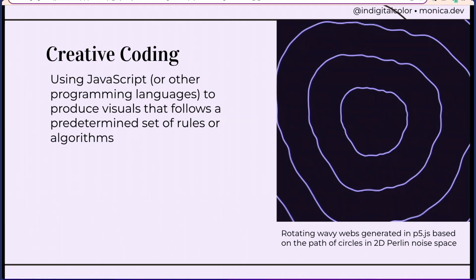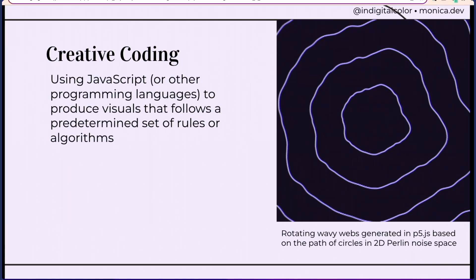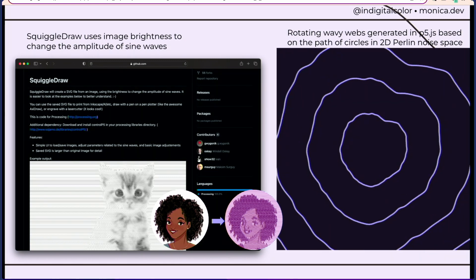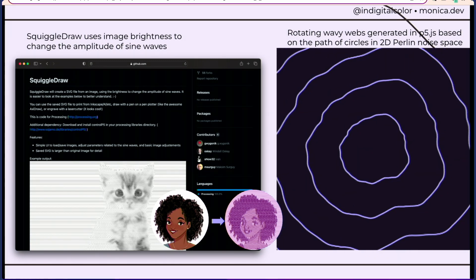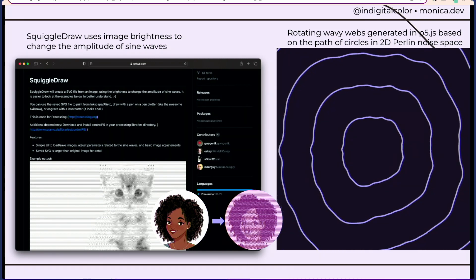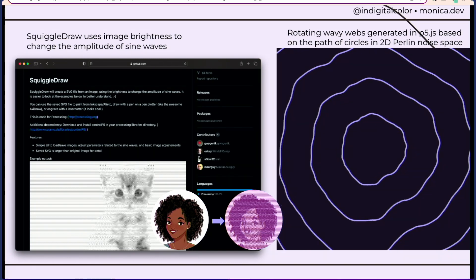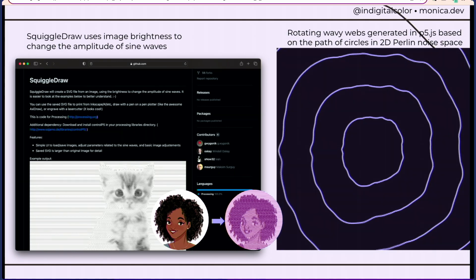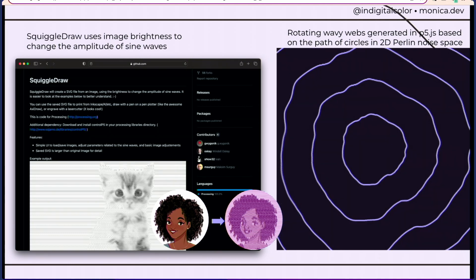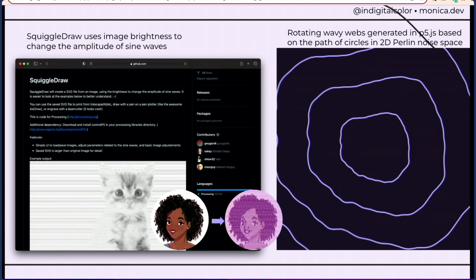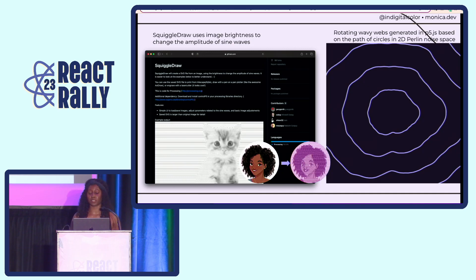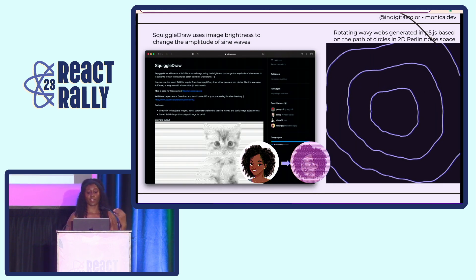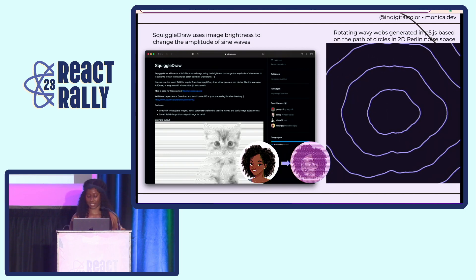And if you're not familiar with creative coding, it's using JavaScript or really any other programming language to produce visuals that follow a predetermined set of rules or algorithms. And these are two examples of creative coding algorithms. So on the right-hand side is a graphic that I had created using Perlin noise to determine the positioning of the waves and how it moves over time. And we're going to talk a bit more about Perlin noise later on in this talk. And then there's also the squiggle draw algorithm that someone created, which if you put in an image, it will output different lines. And based off of the brightness of the original image, the amplitude of those waves changes.